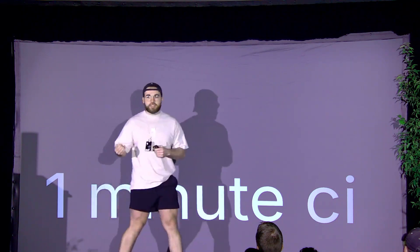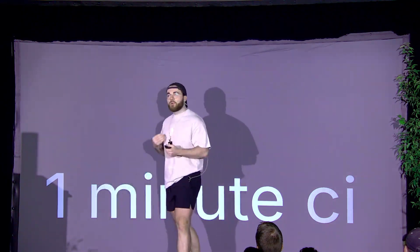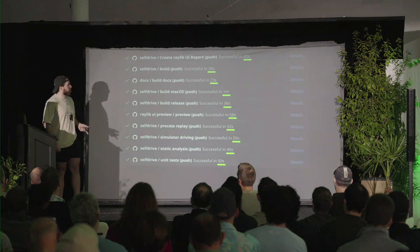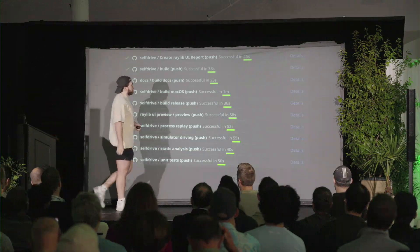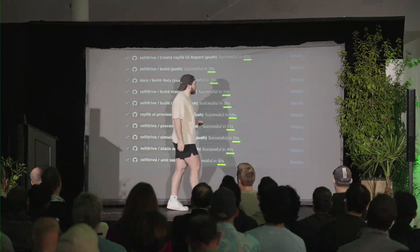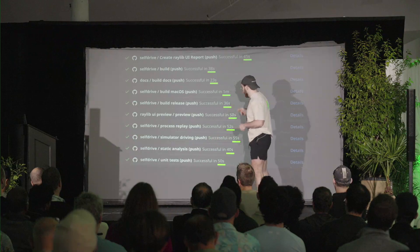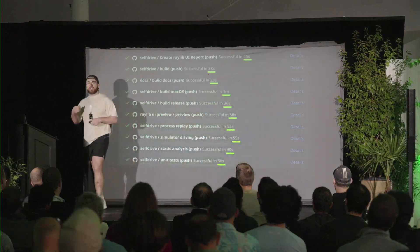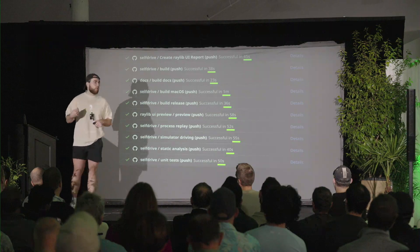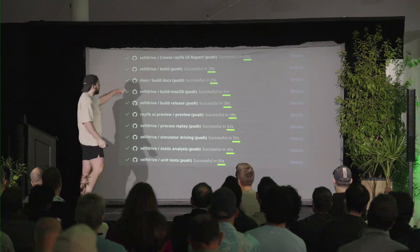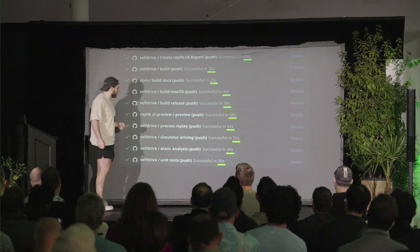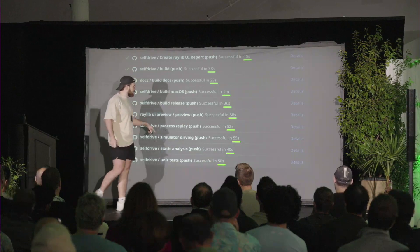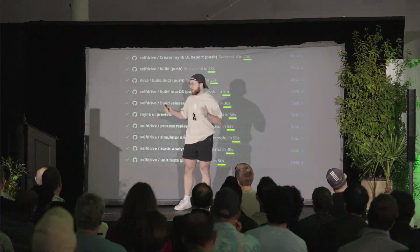We use GitHub Actions for most of our CI on OpenPilot. I took a screenshot from our GitHub page this morning, and as you can see, everything runs in one minute. This is all the tests that we run every time you push a single commit to OpenPilot. We build the release, we build the darks, we test the simulator, we run unit tests, we run static analysis — we do a bunch of stuff.